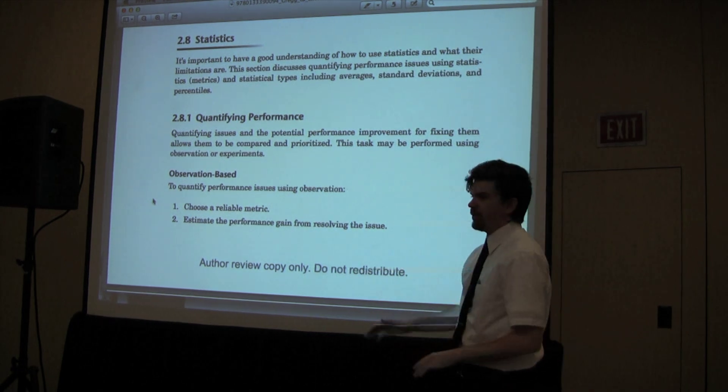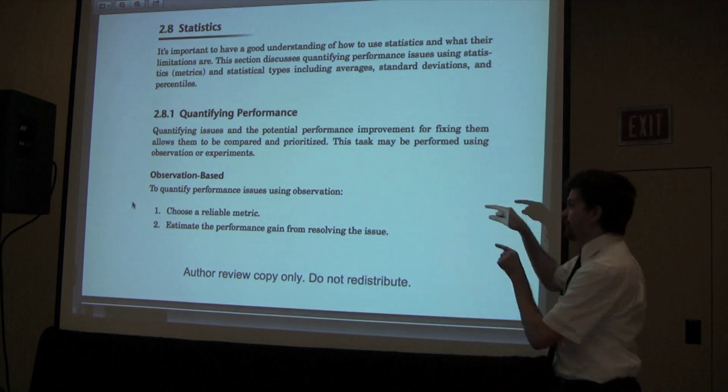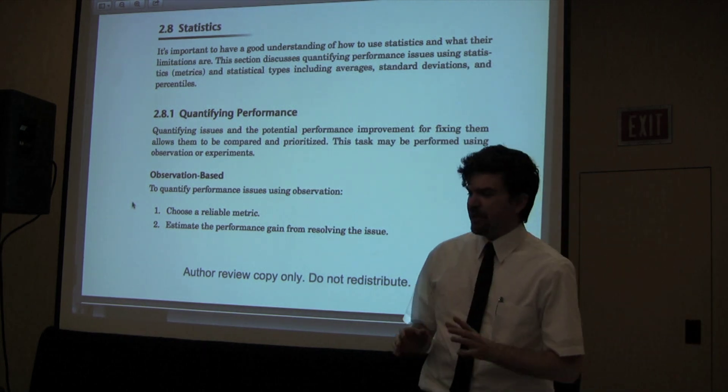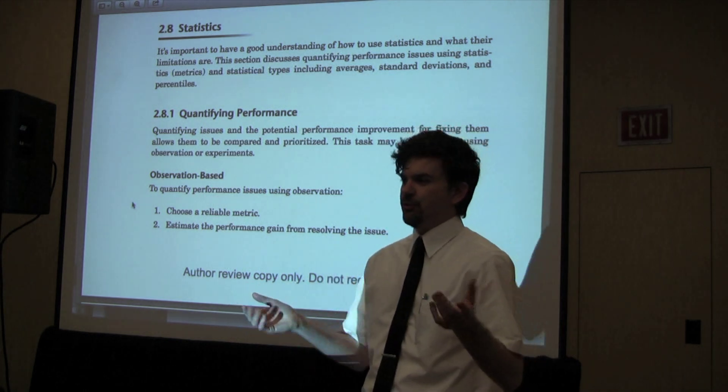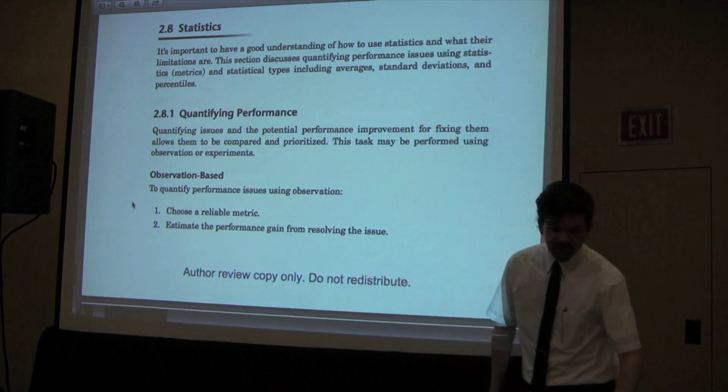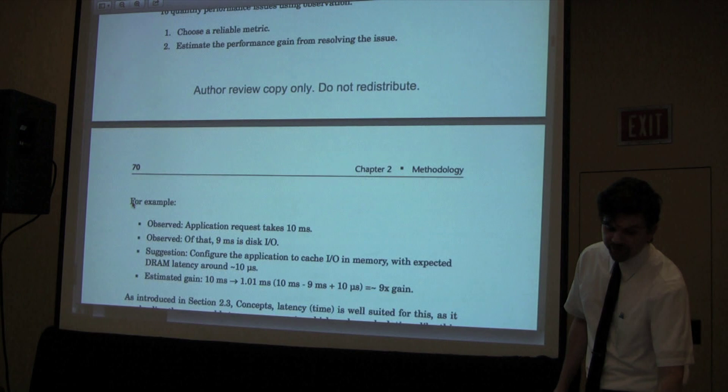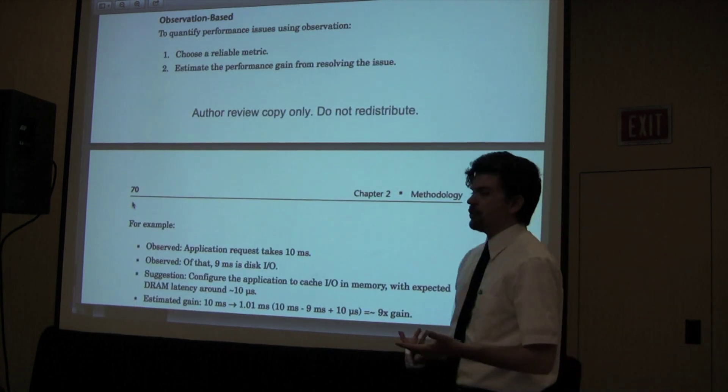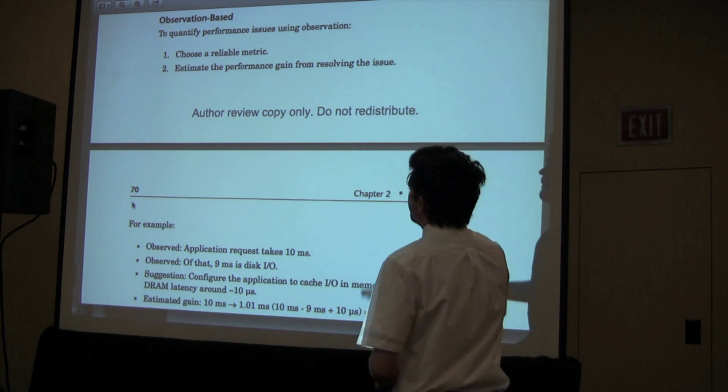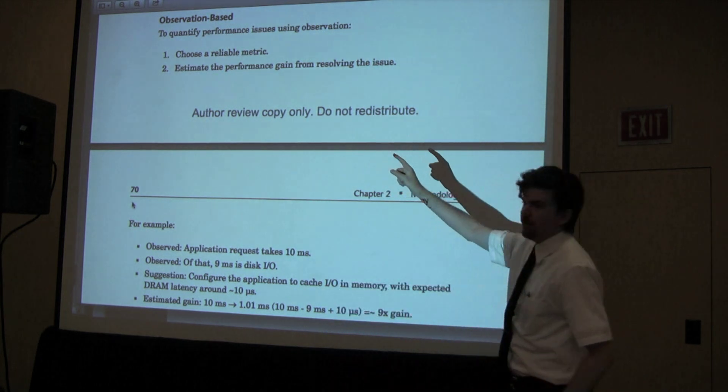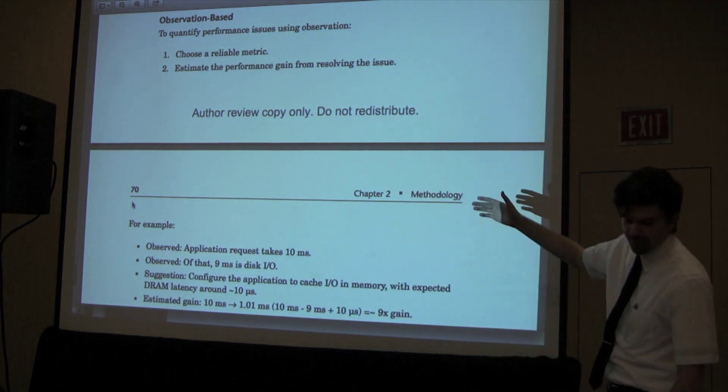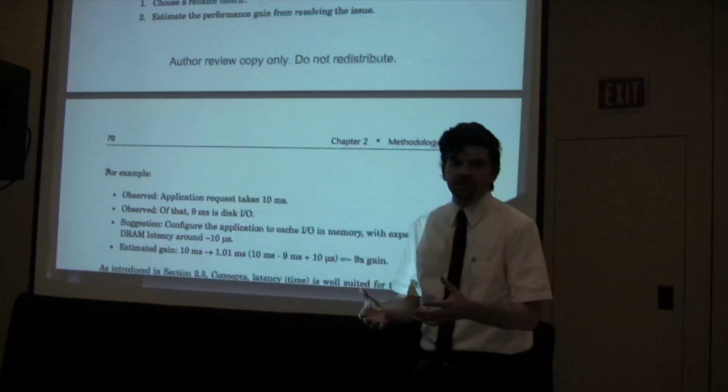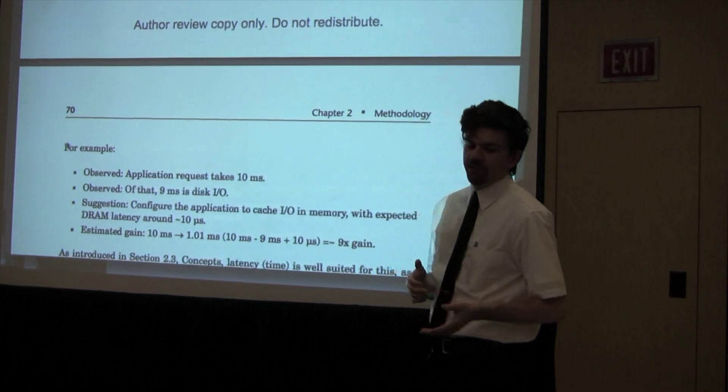Why we care about statistics - quantifying performance. To understand performance of a target, there are two ways: observation-based and experiment-based. Observation-based, I pick a reliable metric, which is why we care so much about picking good metrics, and then I estimate the performance gain from resolving the issue. Managers need to understand this so that they can pick where to put engineering resources.